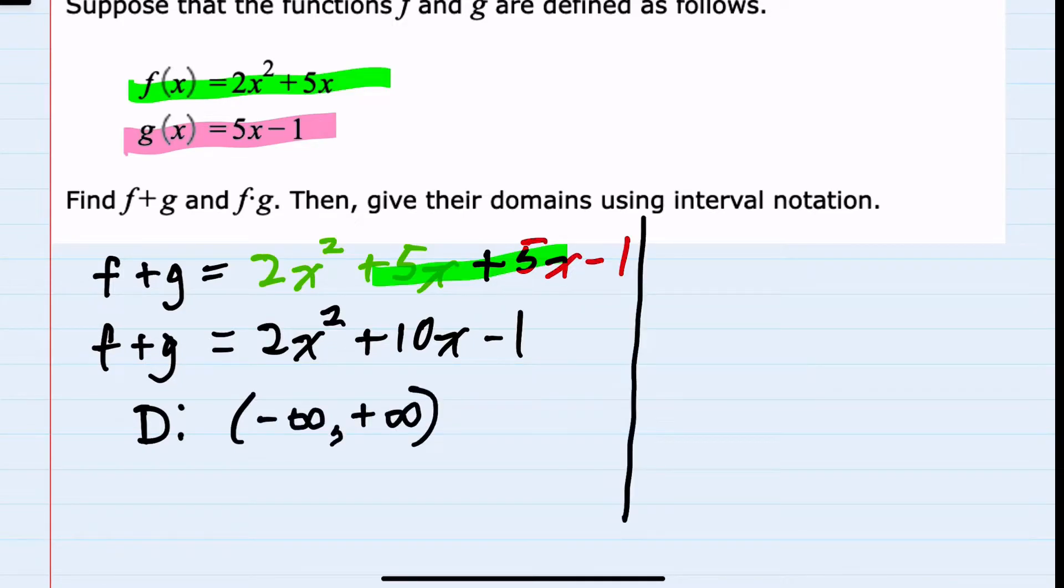All right, now moving to the second question, we're also asked to find f times g. So again, starting with our f function, which is 2x squared plus 5x,